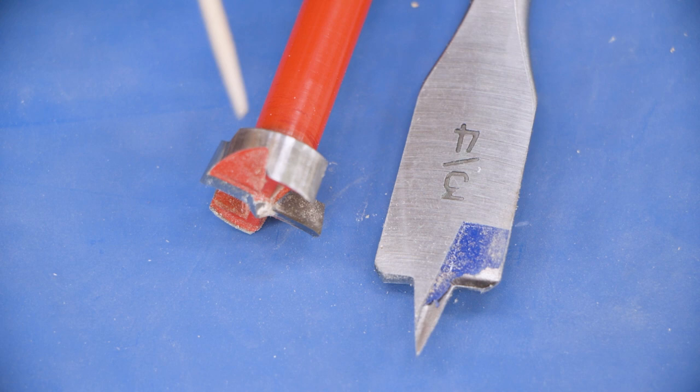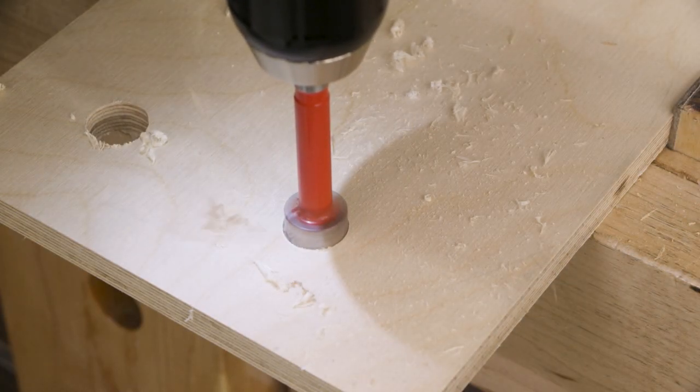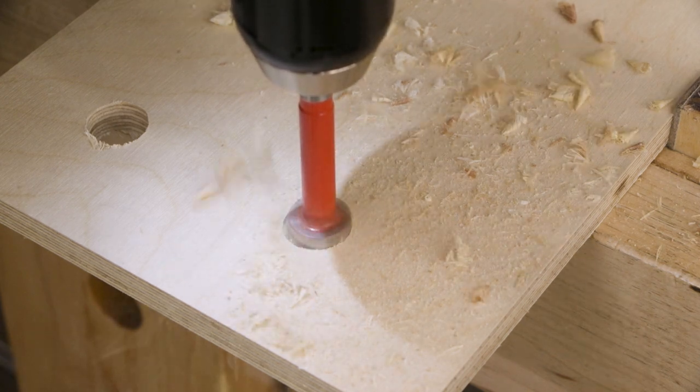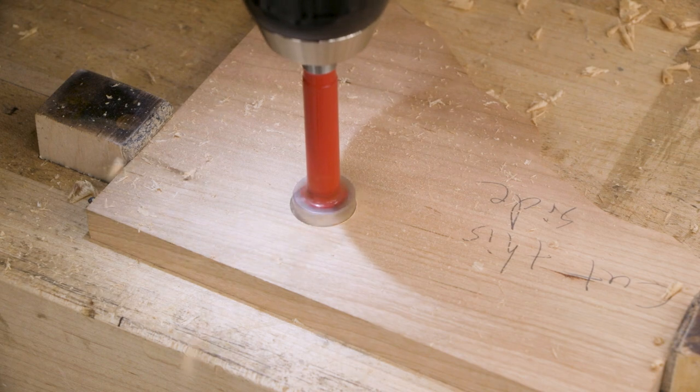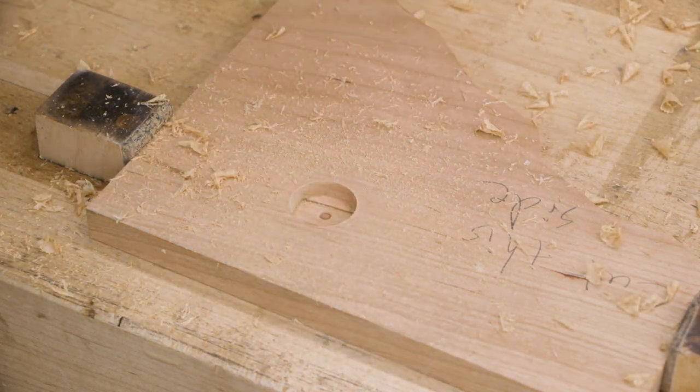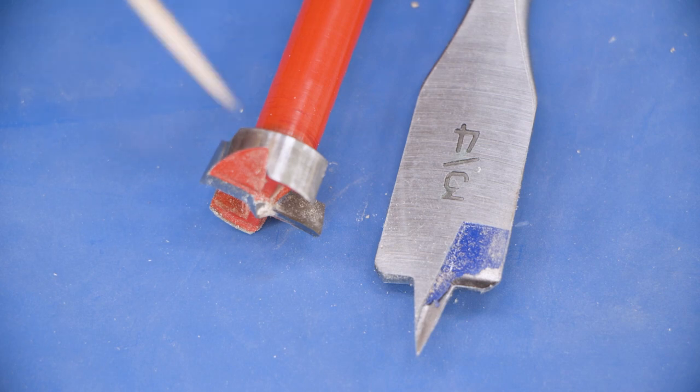So in fine woodworking, we tend to gravitate toward a more expensive option, but much higher quality. And that's a Forstner bit. Forstner bits are slower cutting. You have more control, probably still a good idea to use a drill press when you use them. But the hole itself is going to be a nice flat bottom. So if you're doing like European cup hinges or something like that, a Forstner bit is going to be the way to go.